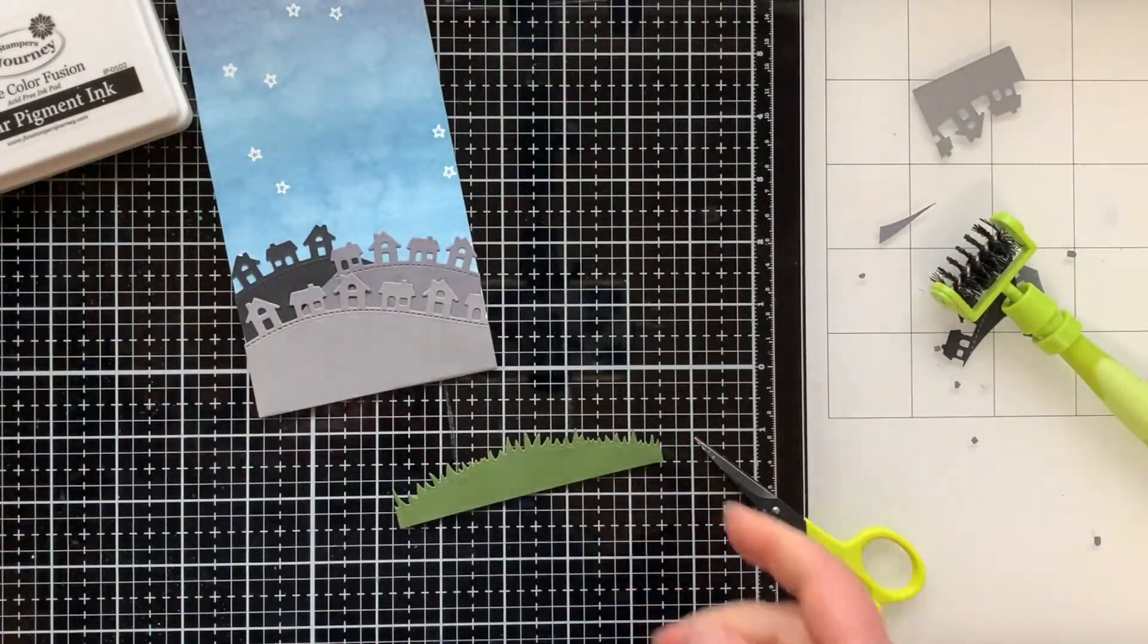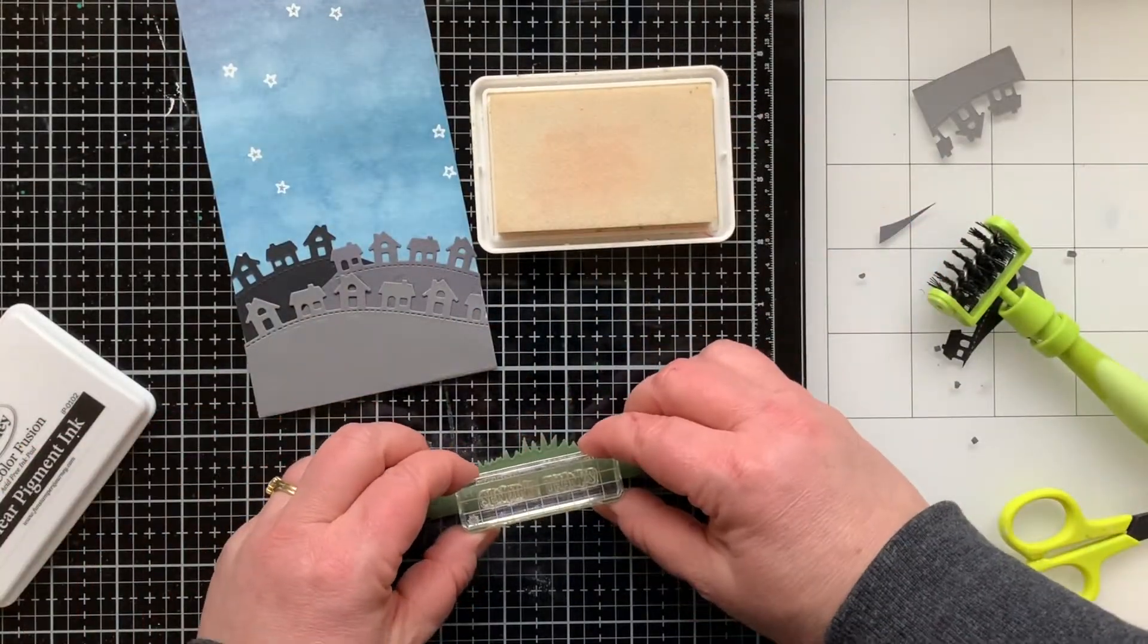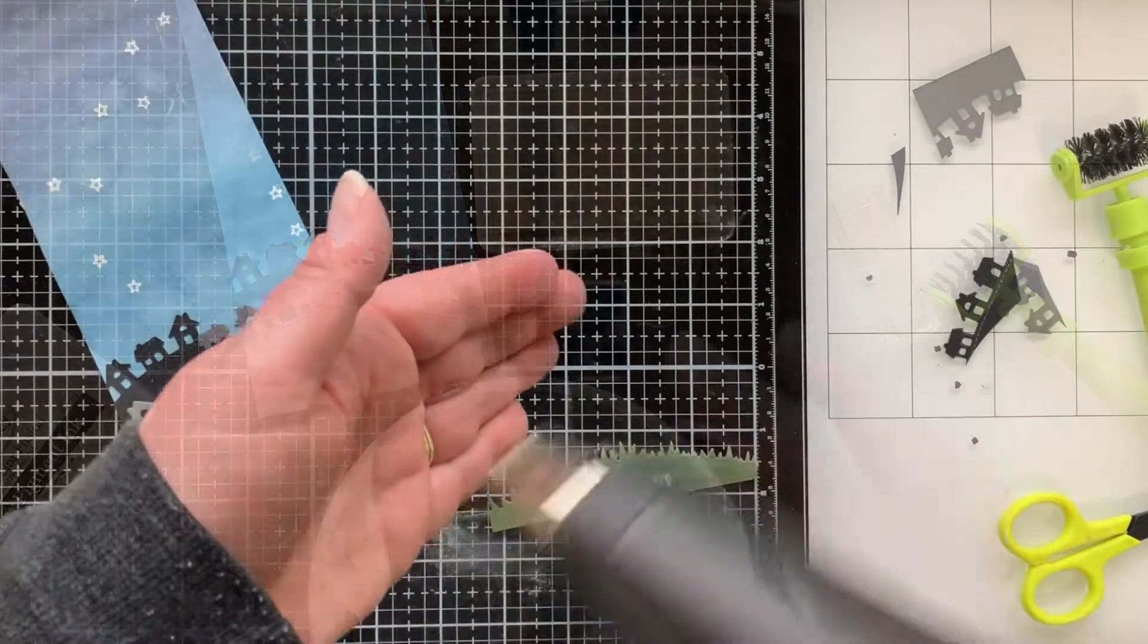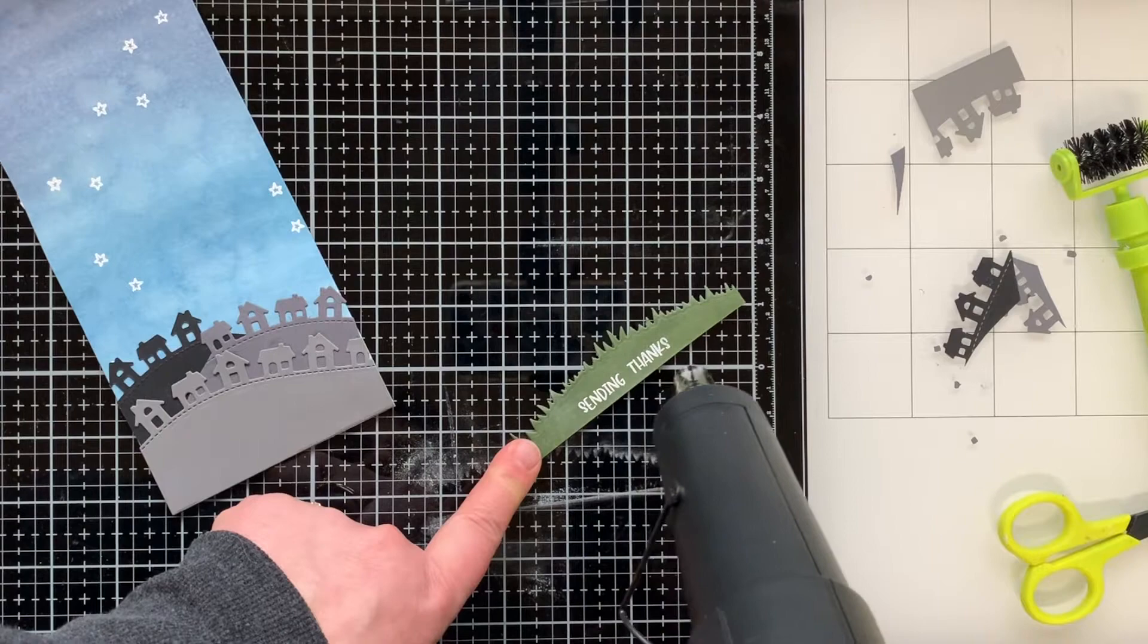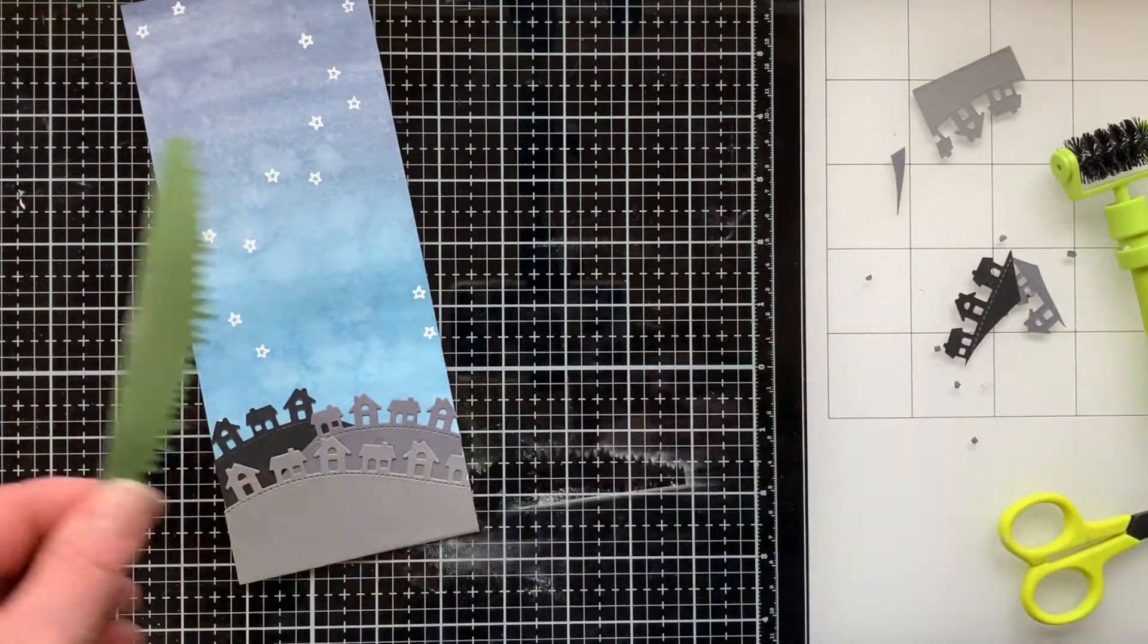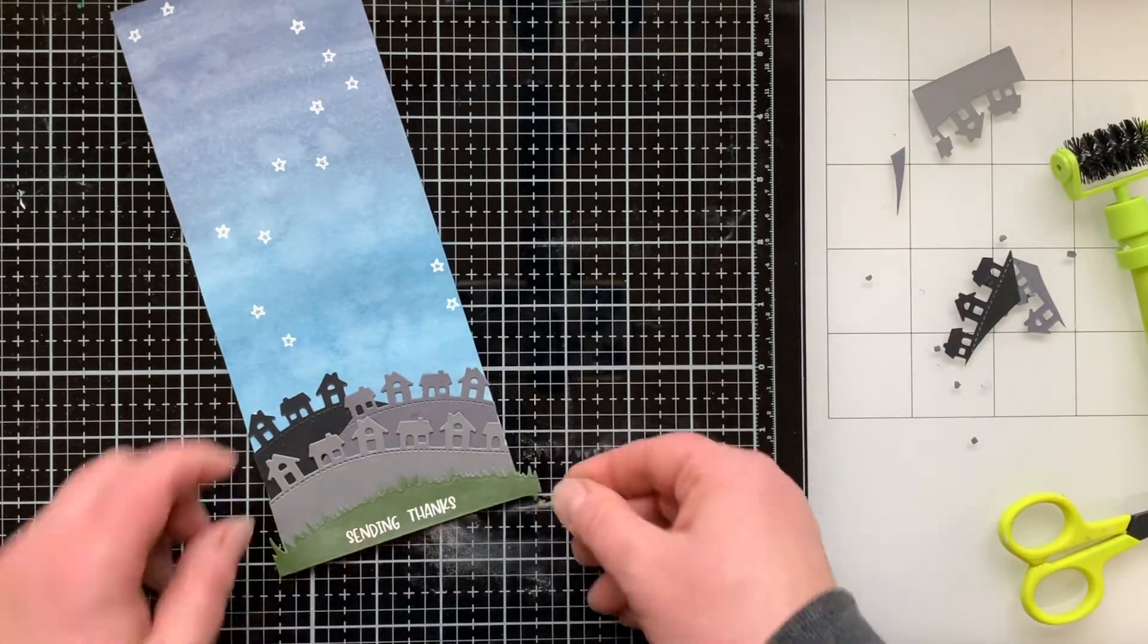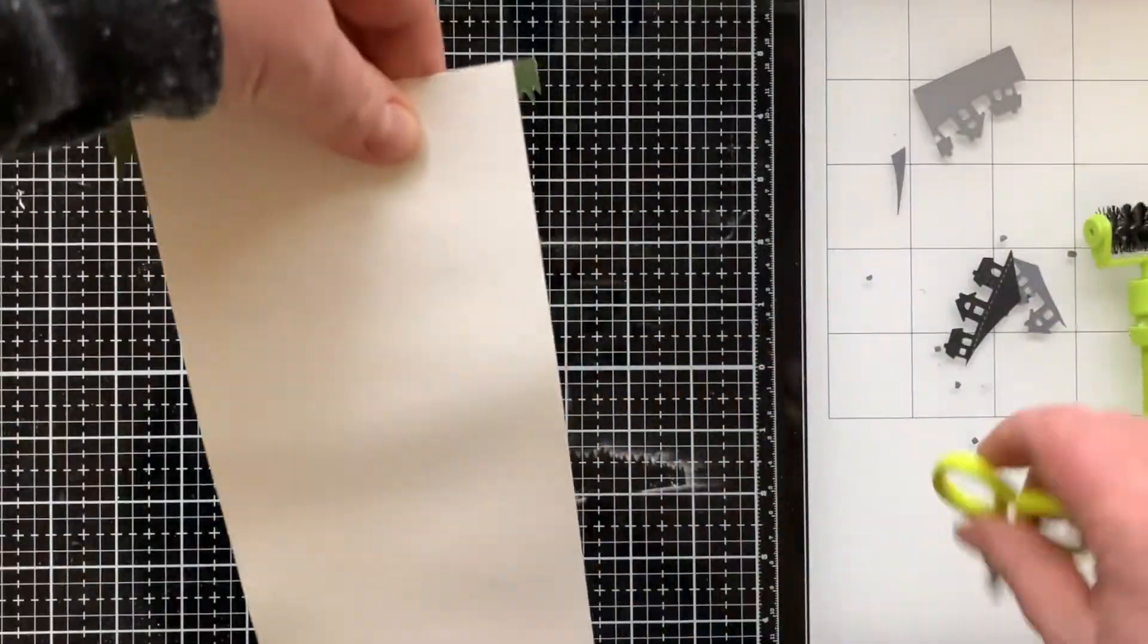Then I can trim off any excess that hangs off the edge and then I will go back and put some glue under those rooftops and press them down on all of the layers. Now I have a piece of grass cut from some dark green cardstock. This is using a die from the mushroom border stamp set by Lawn Fawn, and I'm stamping that with sending thanks, one of the sentiments in the peekaboo balloon stamp set. I will emboss that with white powder so that it pops and stands up off of that dark green cardstock.